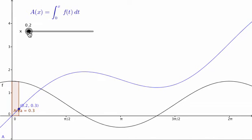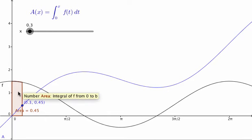Now, as we slide along and we increase the value of x, notice that the brown piece here is the area under the curve from t equals 0 to t equals x, in this case t equals 0.3. And GeoGebra has told us that this area is 0.45. And the graph of a of x has the point 0.3, 0.45 on it.